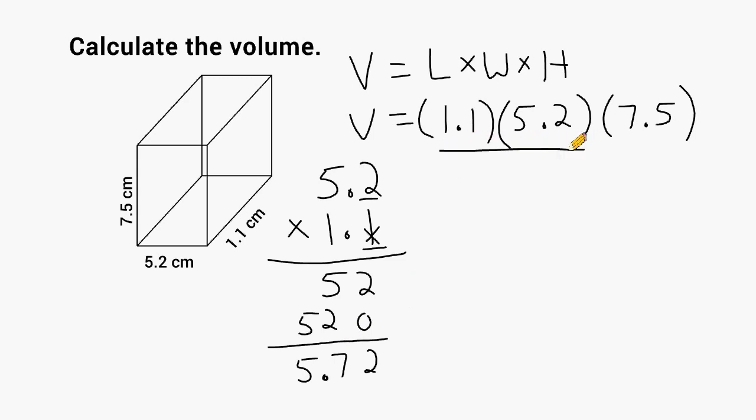So now we have to take the product of these two numbers, which is 5.72, and multiply that by 7.5.